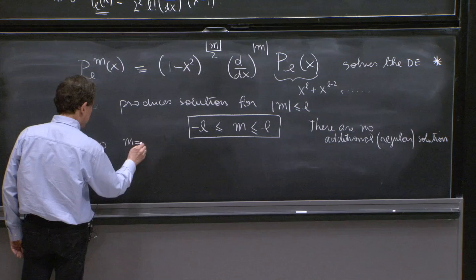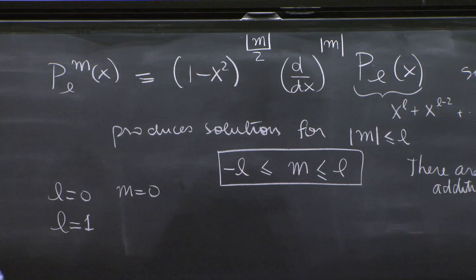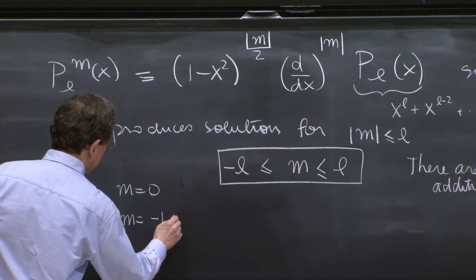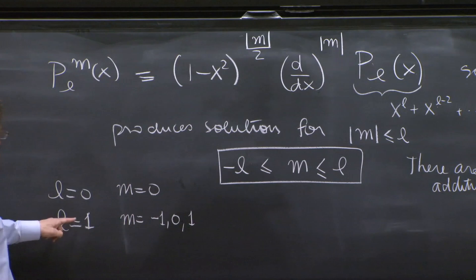So for example, you have l equals 0, in which case m must be equal to 0. But if you choose state with l equals 1, or eigenfunctions with l equal 1, there is the possibility of having m equals minus 1, 0, or 1. So there are three wave functions. In that case, psi 1 minus 1, psi 1, 0, and psi 1, 1.